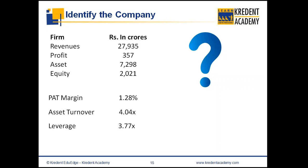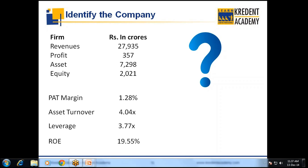To clarify, this leverage is not debt-by-equity; it is total assets employed over equity. So assets are a function of own capital, loan funds, and current assets and liabilities. Do not confuse this with debt-to-equity, which only considers long-term or outside debt. Here, working capital — that is, current liabilities — is also included. And ROE is 20%, which is the average ROE.